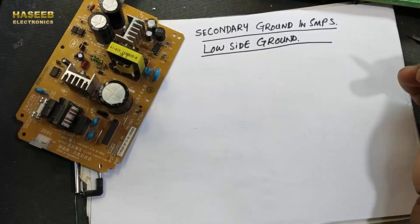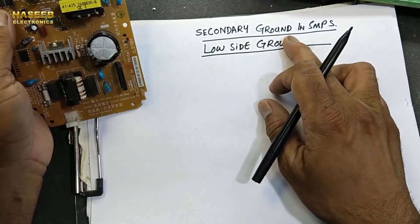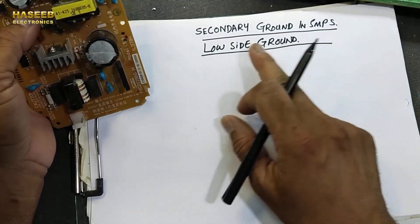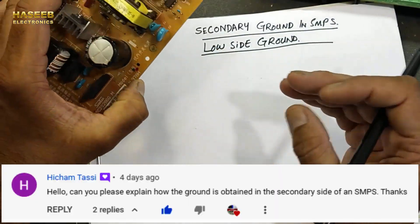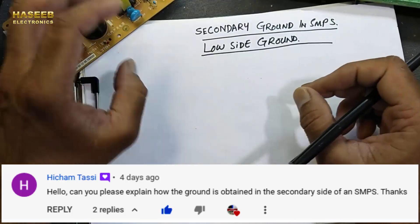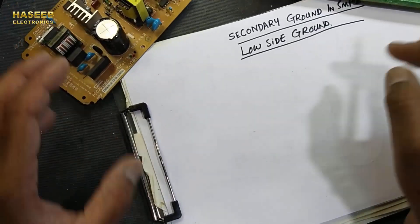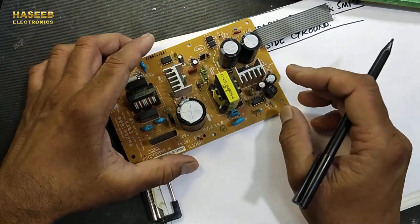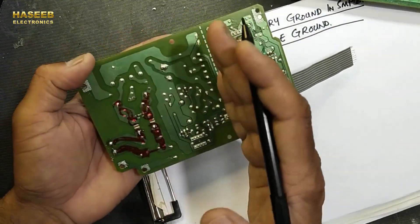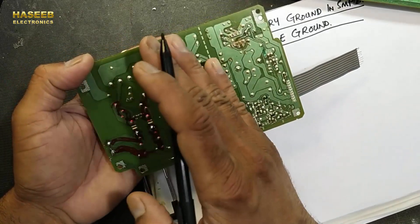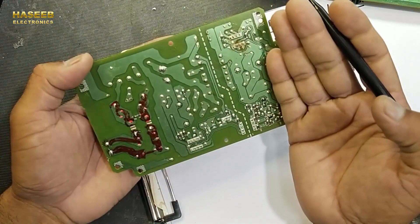In this video we will discuss secondary ground in switch mode power supply, also called low side ground. This is a question from one of my viewers: how do we obtain the ground on the secondary side of an SMPS? When we look at any switch mode power supply or transformer-based power supply, it has two portions — primary and secondary, also called high side and low side.